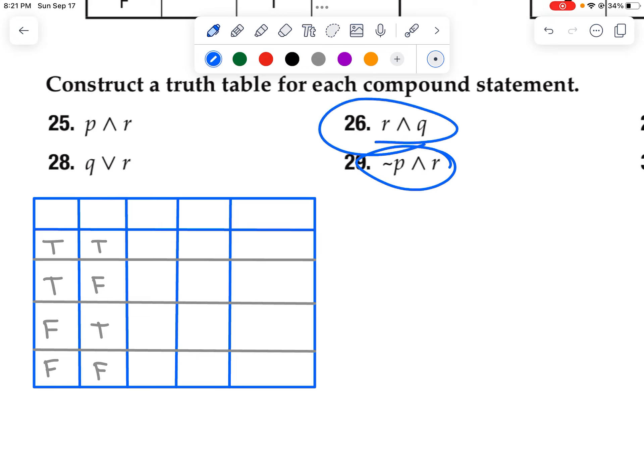Like, if I wanted problem 26 instead, I would just fill this in with R, Q, not R, not Q. And then I would put my question here, R and Q. And I can just fill this out accordingly.